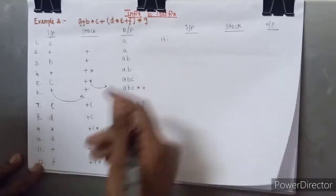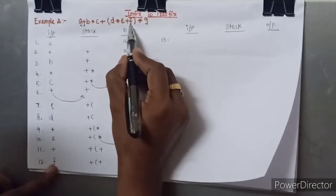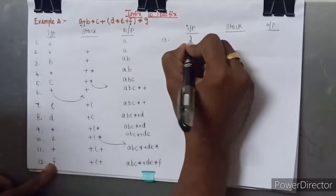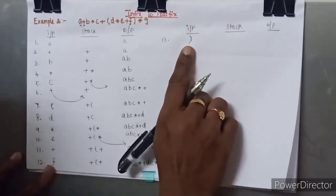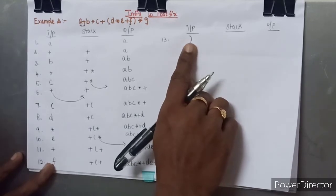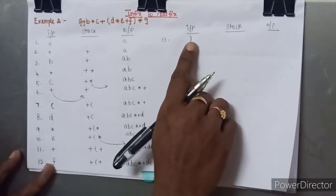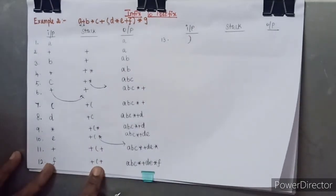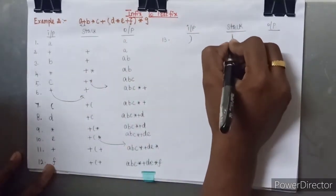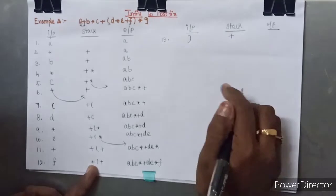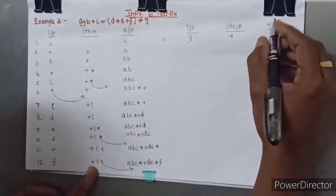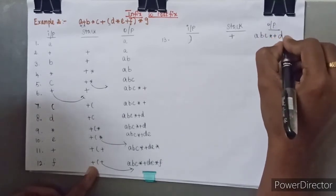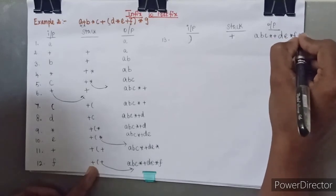At the 13th step, after F, we encounter a close parenthesis. The rule is that we pop all symbols between the matching open parenthesis and this close parenthesis. There is a plus between them, so it is popped out, leaving only one plus on the stack. That plus is moved to the output, giving A B C star plus D E star F plus.